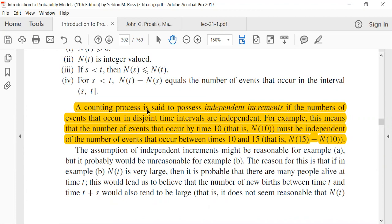So a counting process is said to possess independent increments if the number of events that occur in disjoint time intervals are independent. This is not true for every counting process, but for some counting process this might be true. But what he is saying is that, let's say, I take one interval ST and I take another interval, let's say AF.